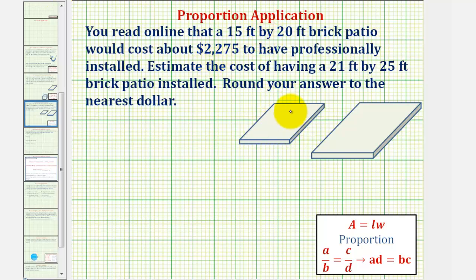So if this is our first brick patio, the dimensions would be 15 feet by 20 feet and the area of the patio would be equal to length times the width, or 15 feet by 20 feet, giving us an area of 300 square feet. And we're told the cost of this patio is $2,275.